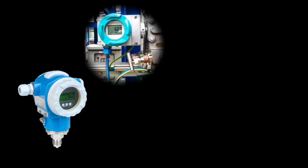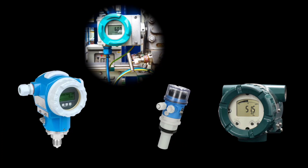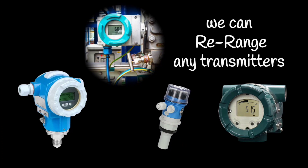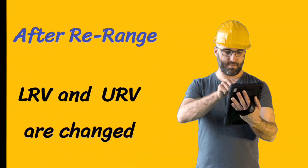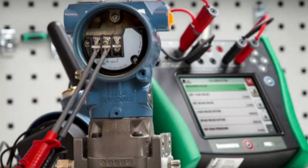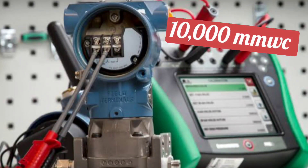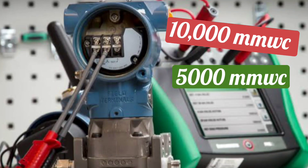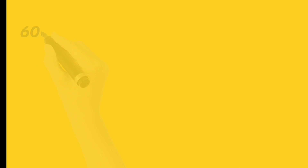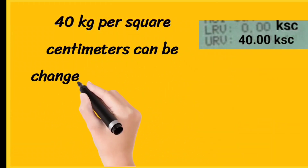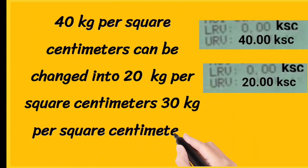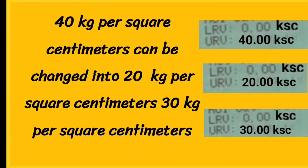Any transmitter — whether it is a pressure transmitter, differential pressure transmitter, temperature transmitter, or any other transmitter — we can re-range it. After re-ranging a transmitter, its LRV and URV are changed. For example, 10,000 mm WC can be changed into 5,000 mm WC or 7,000 mm WC. 600 degrees Celsius can be changed into 300 degrees Celsius. 40 kilograms per square centimetre can be changed into 20 or 30 kilograms per square centimetre.